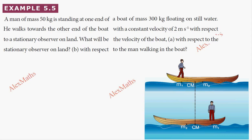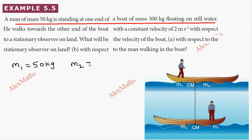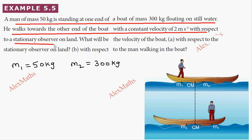Hi students, this is Alex here. In example 5.5: a man of mass 50 kg is standing at one end of a boat of mass 300 kg floating on still water. We have man of mass m1 = 50 kg and boat of mass m2 = 300 kg. He walks towards the other end of the boat with a constant velocity of 2 meters per second with respect to a stationary observer on land.